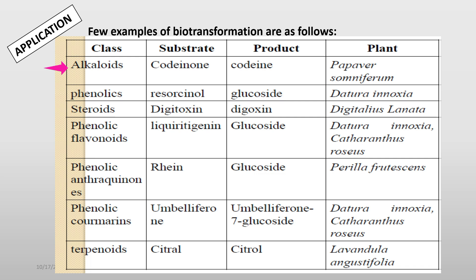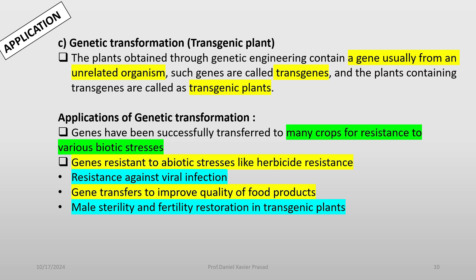Phenolic flavonoids: liquiritigenin is a substrate which can give glucoside in Datura inoxia and Catharanthus roseus. Phenolic anthraquinones: rutin as a substrate, the product obtained is glucoside in Perilla frutescens. Phenolic coumarins: umbelliferone as a substrate converted to umbelliferone-7-glucoside as a product in Datura inoxia and Catharanthus roseus. Terpenoids: citral as a substrate, a biotransformation product can be obtained in Lavandula angustifolia.